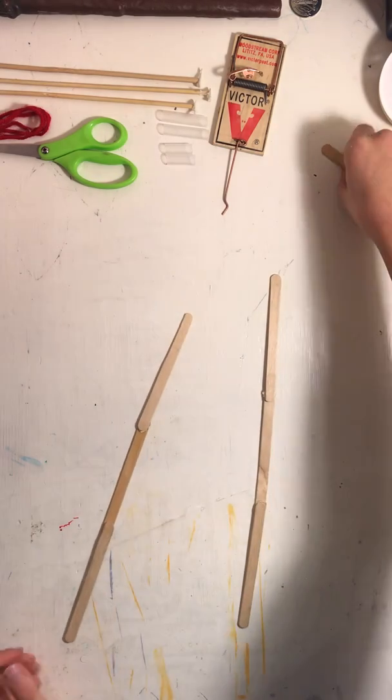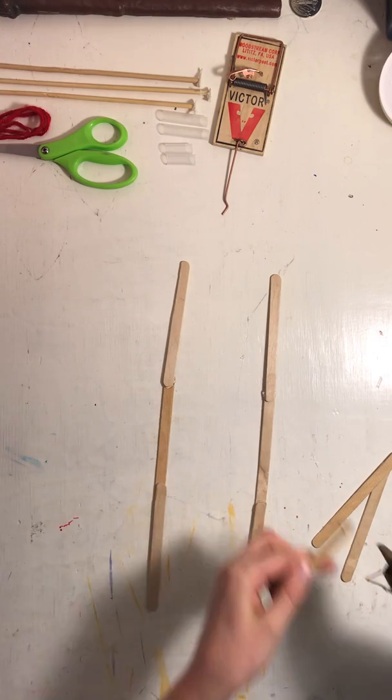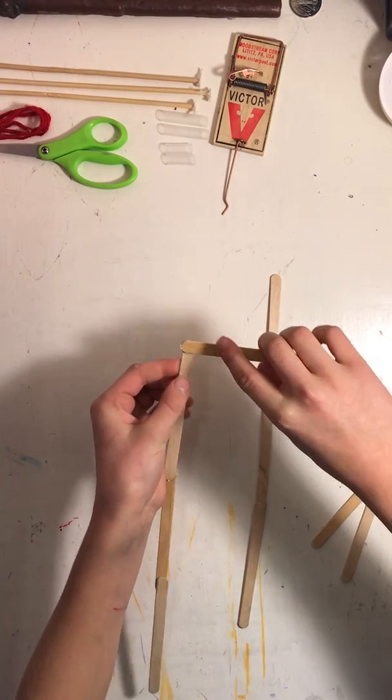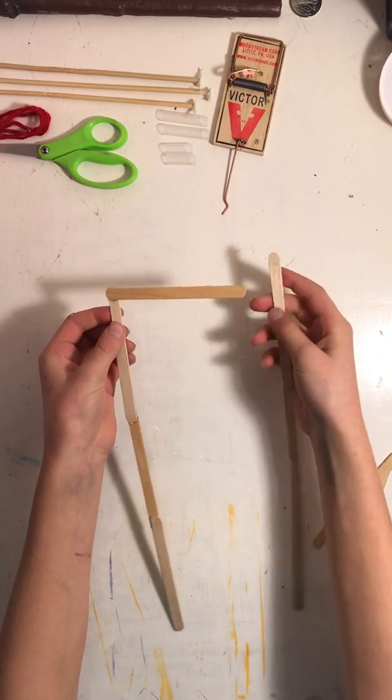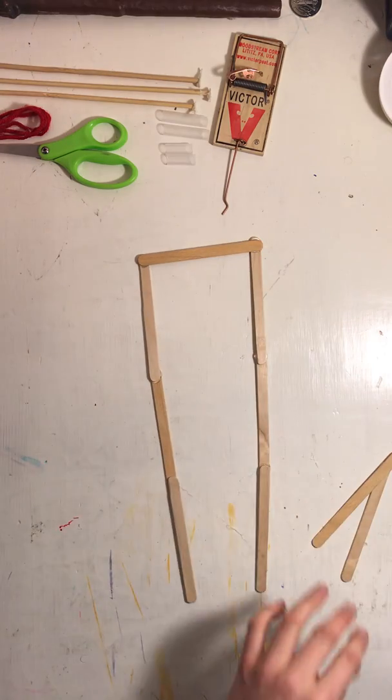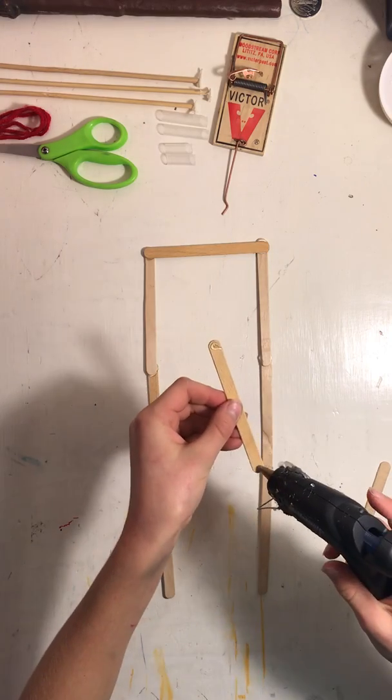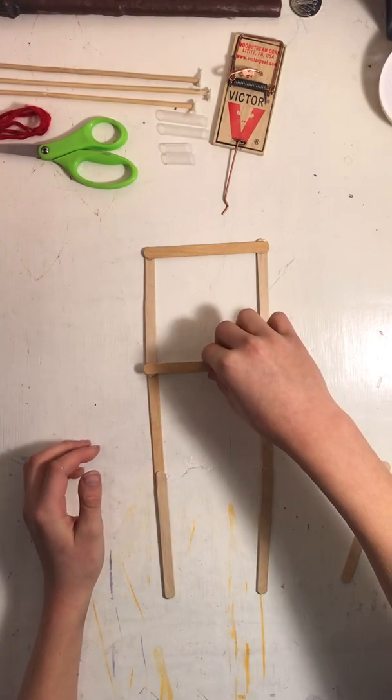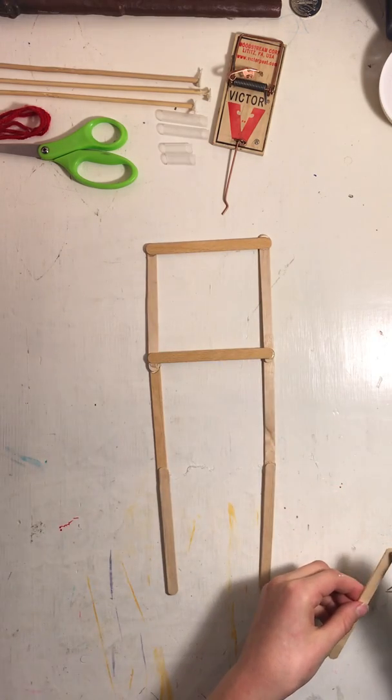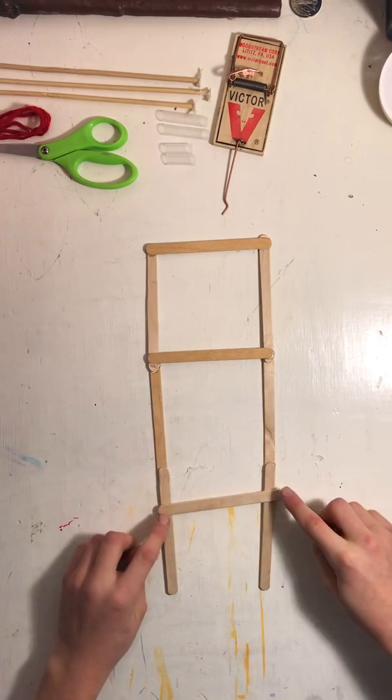For the next step, you're going to want three more popsicle sticks. Take your glue gun and put glue on either end of it, and stick one end on the end of one of the ones you joined earlier, and the other end of the other one. Now take your second popsicle stick, put more glue on it, and place it right there. And then your third one, glue on either end, and put it right there.